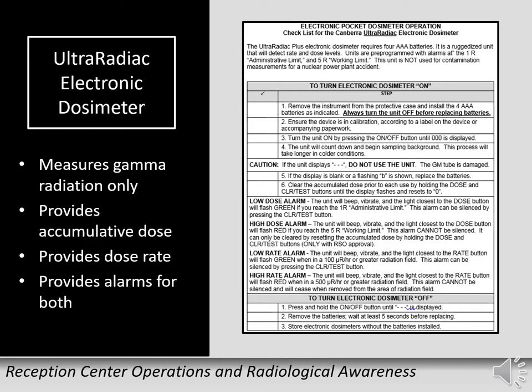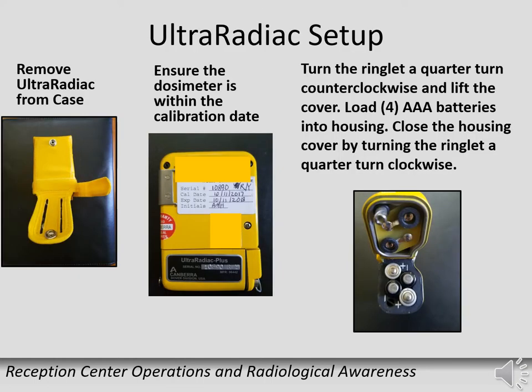The UltraRadiac is an electronic dosimeter that can be used instead of the direct reading dosimeter, though you are still required to have a permanent record dosimeter. A checklist will direct the setup and operation of this dosimeter. For setup, remove the dosimeter from the case and ensure the calibration date is current.